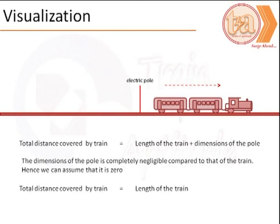Let us now visualize the next sequence. The train has passed by the electric pole. Given that the electric pole is of negligible width, the total distance that is covered by the train would be nothing but the train's length itself.